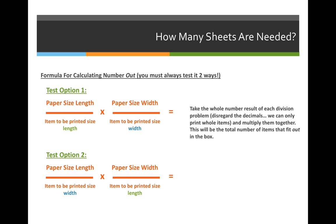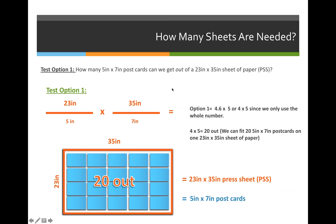Let's look at it with an actual example. If I have a 23 by 35 inch press sheet and I'm trying to print postcards on it that are 5 inches by 7 inches, I can divide 23 by 5, which is the length of paper and the length of the postcard, and 35 by 7, which is the width of the paper and the width of the postcard, and I will get exactly 4.6 by 5. So 23 divided by 5 is 4.6 and 35 divided by 7 is 5.